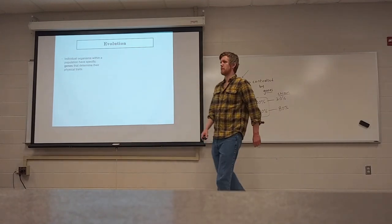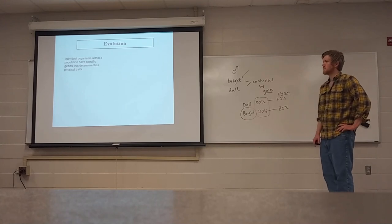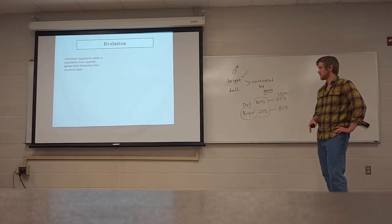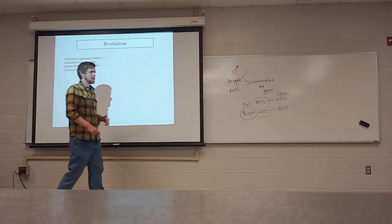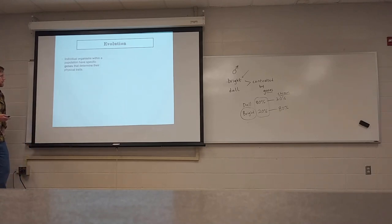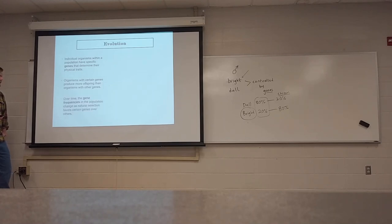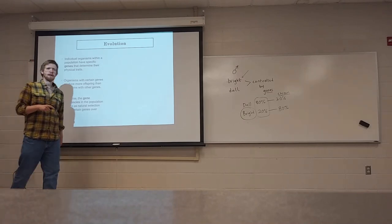Individual organisms within a population have specific genes that determine their physical traits. In this example, male guppies have dull and bright coloration genes. Organisms with certain genes produce more offspring than organisms with other genes, and over time, what evolves — what changes — is the frequency of genes within that population. Guppies were a small-scale example, but how do we look at a much larger scale of change?